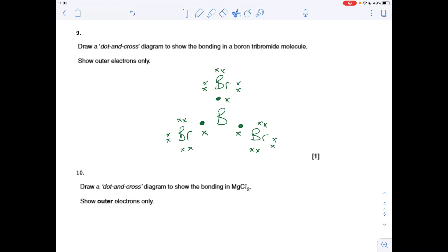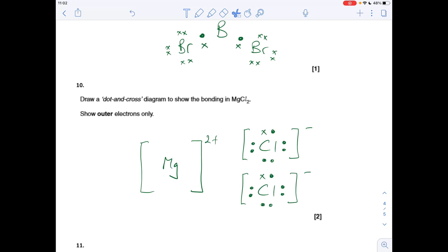Question nine, dot and cross diagram for the bonding in boron tribromide. It's obviously covalent because they're both non-metals and we get that there. Number 10, dot and cross for magnesium chloride. Well, that's ionic, metal and non-metal, so we have those two ions there, and marks wise one for that and one for them.